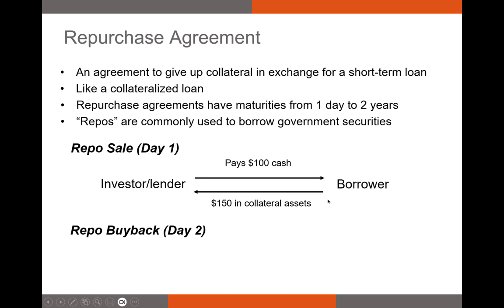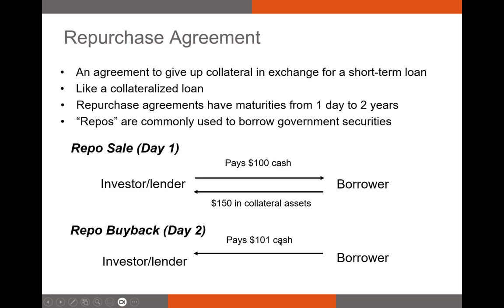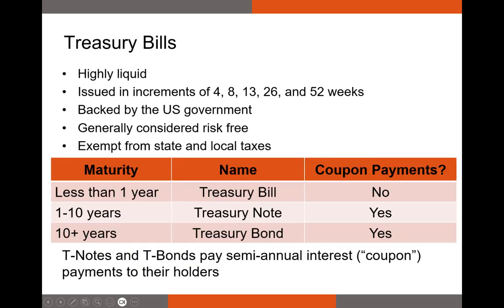Here's how a repo works: if you need to borrow $100 in cash, you put up $150 in collateral assets. If you default, the lender can collect up to $150 in collateral. On day two, the buyback period, you pay $101 — the principal plus interest — and your collateral assets are returned, no longer at risk of seizure.